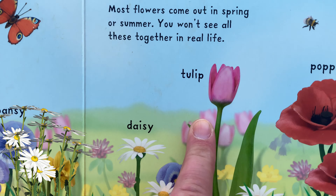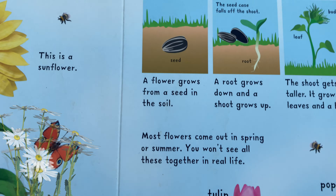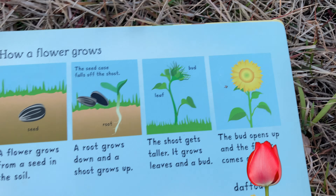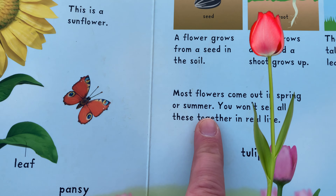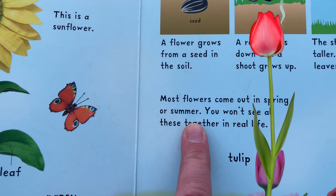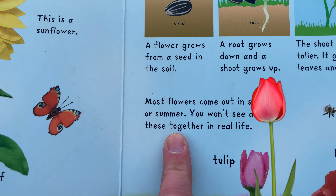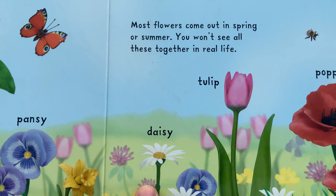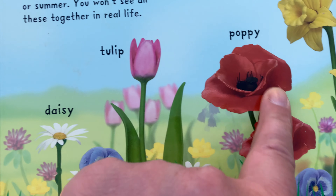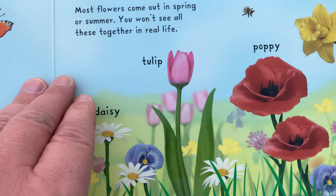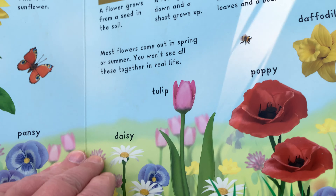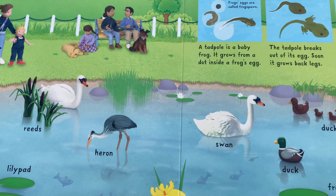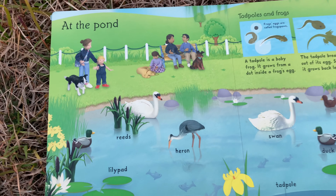And then this is showing how a seed grows. Most flowers come out in spring or summer, and you won't see all these together in real life — that's true. All of these flowers together, you don't see them together. They're different varieties.